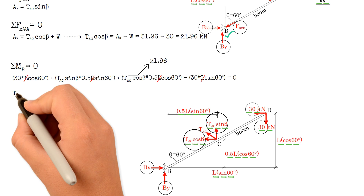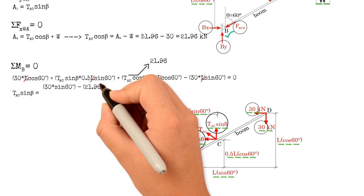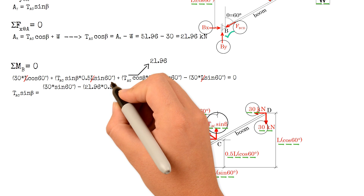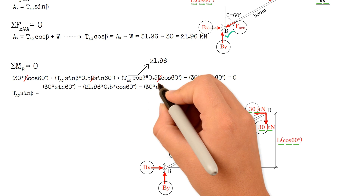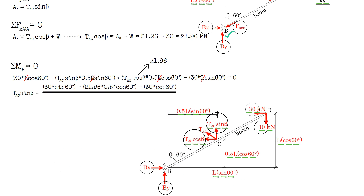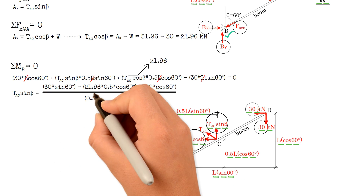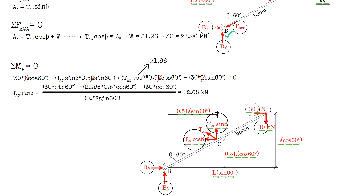Getting the value of tension AC times sine of beta: we have 30 kN times sine 60°, minus 21.96 kN times 0.5 times cosine 60°, minus 30 kN times cosine 60°, all divided by 0.5 times sine 60°. This gives us a value of 12.68 kN.